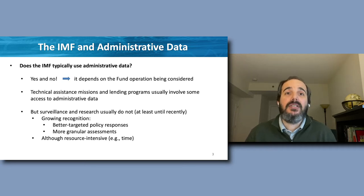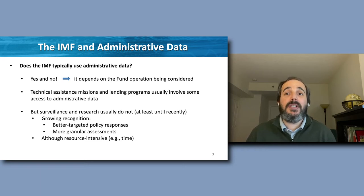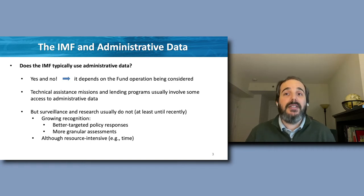In contrast, surveillance and research usually do not use administrative data, or at least that has been the case until recently. Surveillance and research have traditionally been conducted without using administrative data — partly because of the state of the art, simply thinking of academic research just 10 or 20 years ago, and also because of the costs involved, including opportunity costs in terms of staff time. That said, there is a growing recognition within the Fund that using administrative data helps provide better targeted policy responses and more granular assessments.